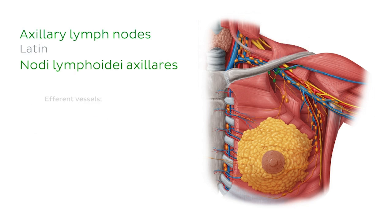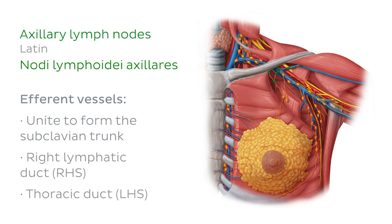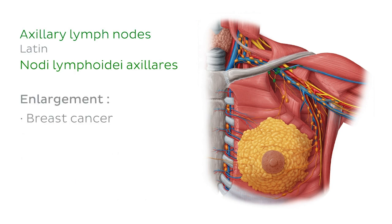Efferent vessels of these axillary nodes unite to form the subclavian trunk, which then opens into the right lymphatic duct on the right side, or into the thoracic duct on the left side. The most common cause of malignant axillary lymph node enlargement is breast cancer.